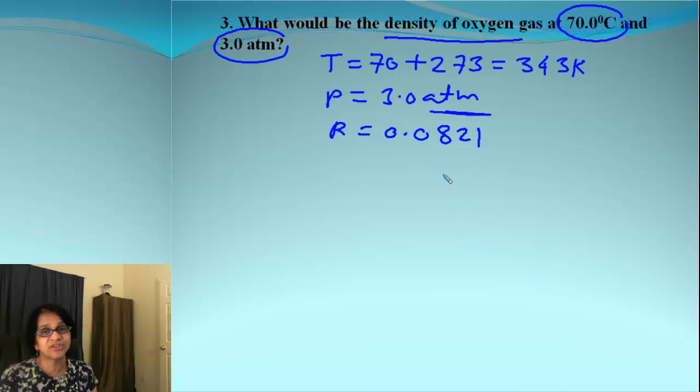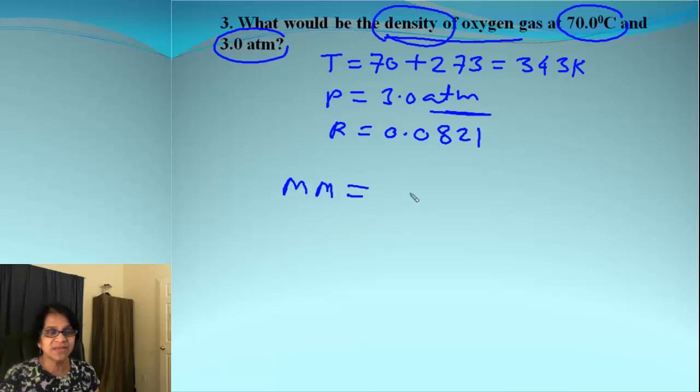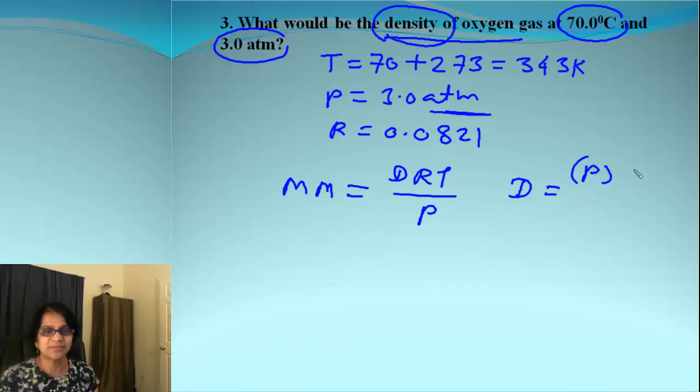And now it's simply plug and chug if you use the right formula. Remember, we need to find density. So the formula which we have should indicate there is density there. Which formula is that? It's molar mass equals DRT over P. And then if I rearrange that for density, what do we get? We get P times molar mass divided by RT. Let's plug and chug. So density will be pressure 3.0.